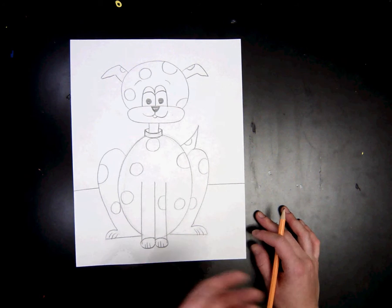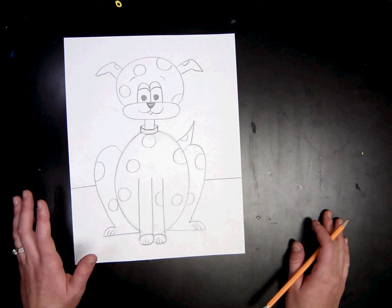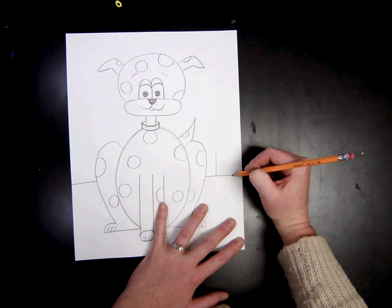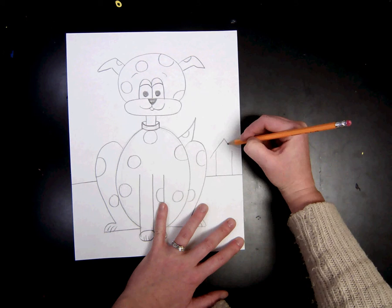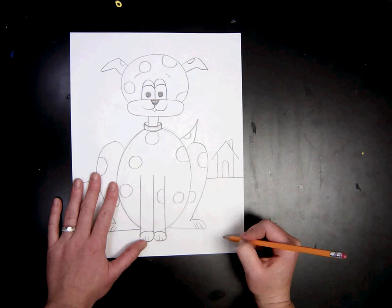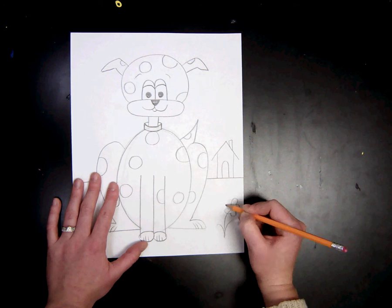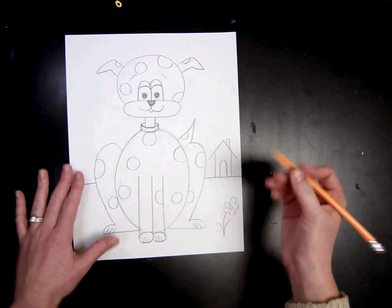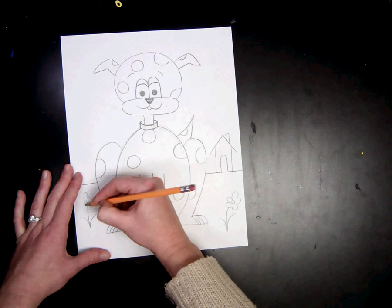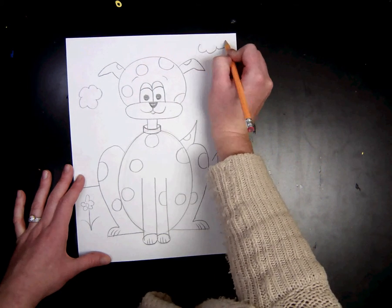Now you can go and you can add any details. If you want to add a dog house, flowers, a sun, clouds. Maybe your dog isn't outside but it's somewhere else. You can kind of create your own background. I think I am going to do a dog house. I'll do some flowers. Go ahead and make your own creative choices and add anything kind of fun to the background.